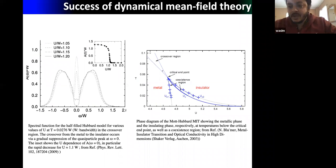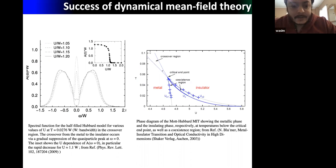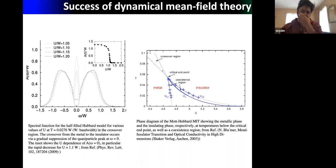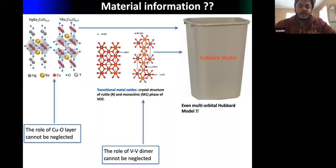Over the last couple of years, DMFT has been a really successful tool for describing strongly correlated systems in various aspects, for example metal-insulator transitions.